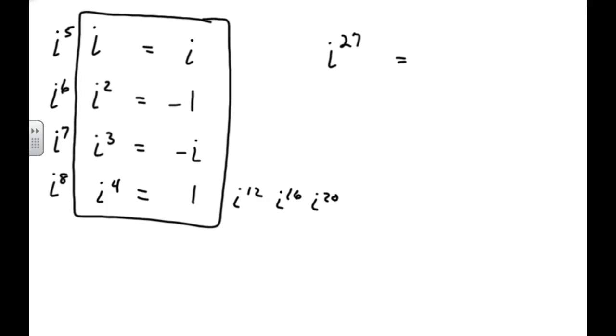With that logic, then i to the eleventh would give me negative i. And i to the tenth would give me negative one. And i to the ninth will give me i because it follows a pattern. Every four is going to run through this iteration, this repeating pattern again.